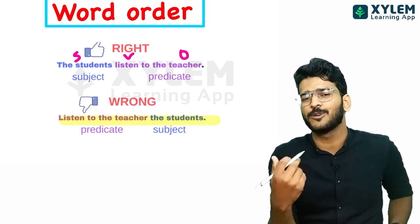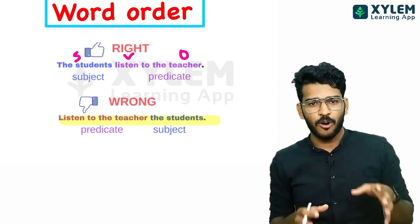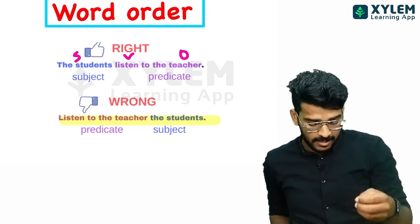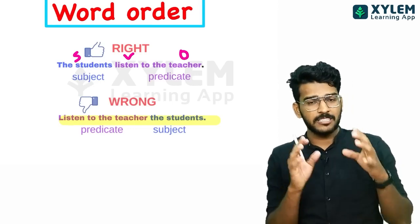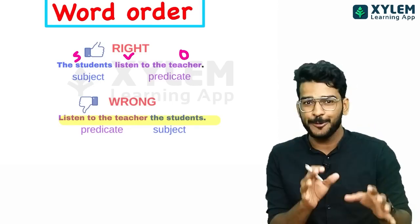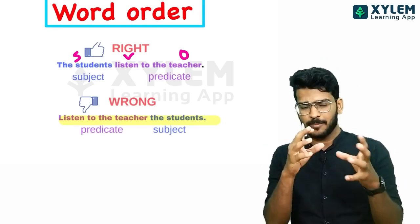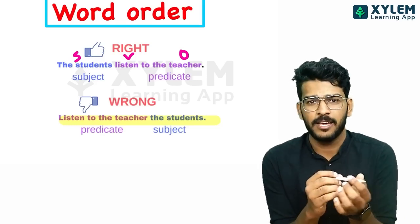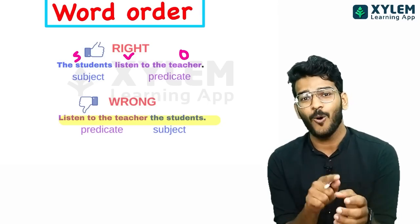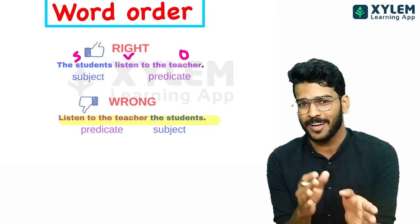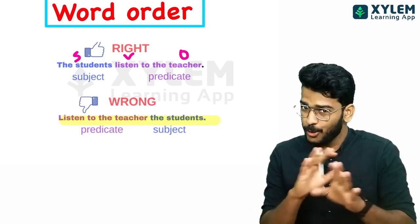If you don't know, there is a problem — is it subject or object? You can use passive voice. The teacher was listened to by the students. But in active voice, there is a subject and object. The word order is S-O-V in some languages, where the verb comes last.